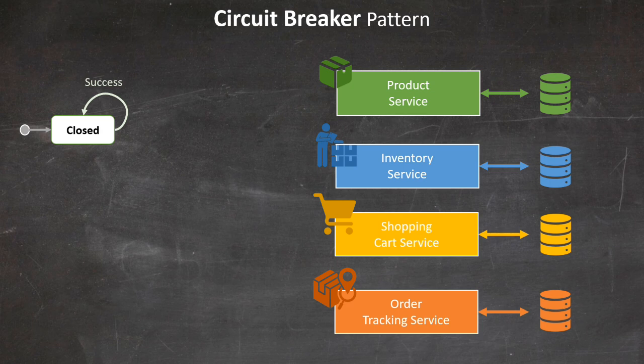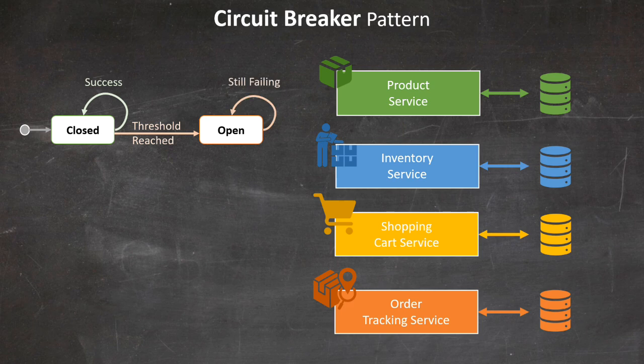So far, all is good. The circuit breaker from the inventory service to the product service is closed. Some orders are placed by our customers to purchase this new phone, and the inventory service calls the product service again to ensure the ordered product is correct — but the call fails. The call is retried and fails again. This breaches our defined threshold and the circuit breaker trips. After a short timeout, using exponential back-off logic, the call is retried again but fails again.